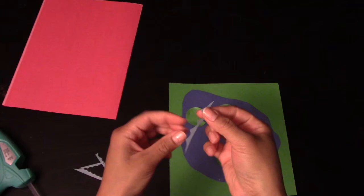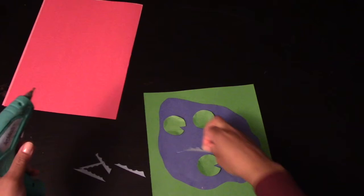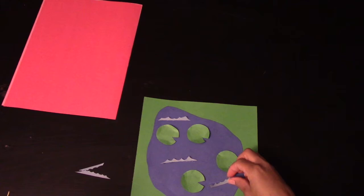Go ahead and take your glue and you can glue a line, and then attach your small waves onto that glue. Repeat that step until all of your glue is on.